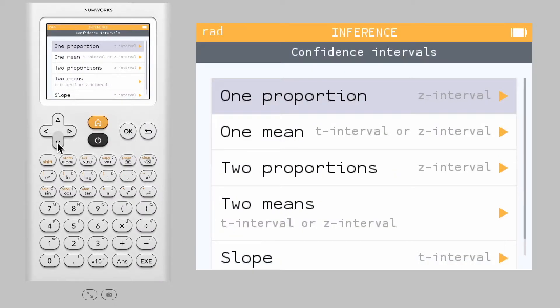For this example, we will construct a two-sample t-interval for a difference in means. Select two means.